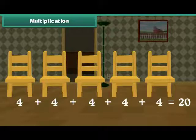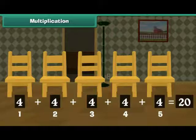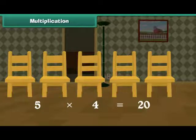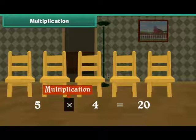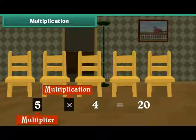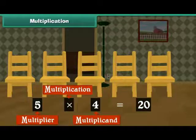In other words, 5 times 4 is 20. We can write it as 5 into 4 is equal to 20. Cross is the sign for multiplication. The first number, 5, is called the multiplier. The second number, 4, is called the multiplicand. The result of multiplication is called product.